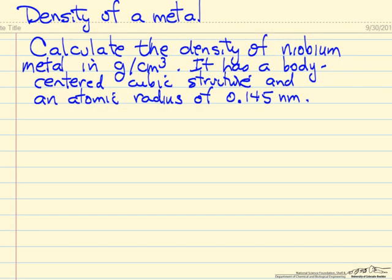The density of niobium metal we calculate in this problem, density in grams per cubic centimeter. This is a body-centered cubic structure, which is important for doing the calculation, and we're given the atomic radius.